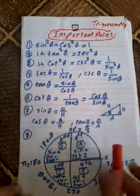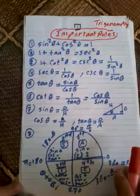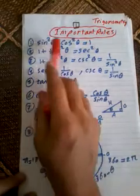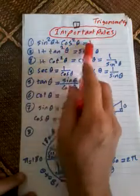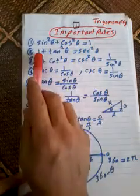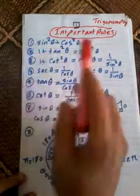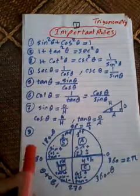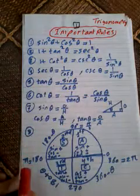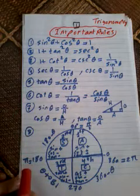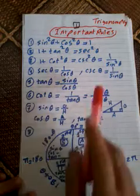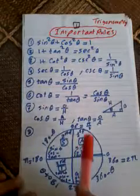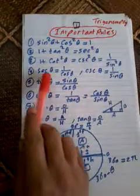The first important rules: sine squared theta plus cosine squared theta equals one; one plus tan squared theta equals secant squared theta; one plus cotangent squared theta equals cosecant squared theta, which equals one over sine squared theta.